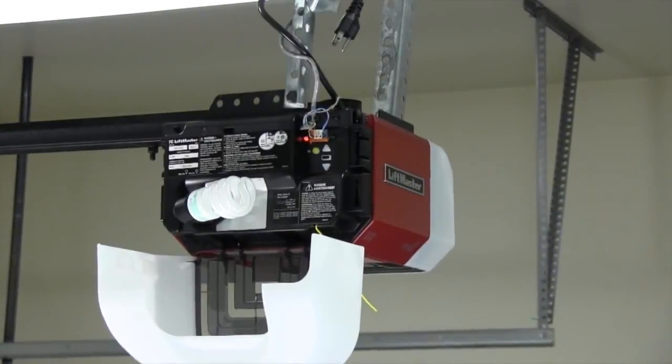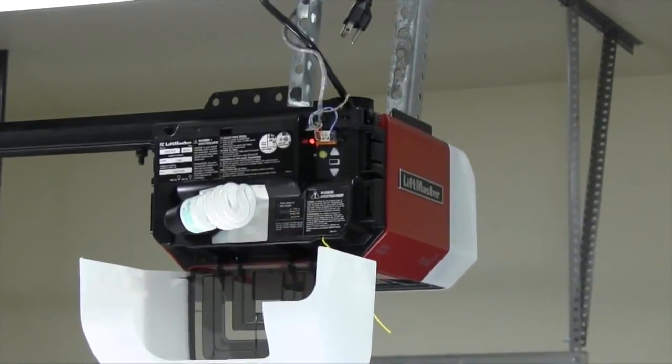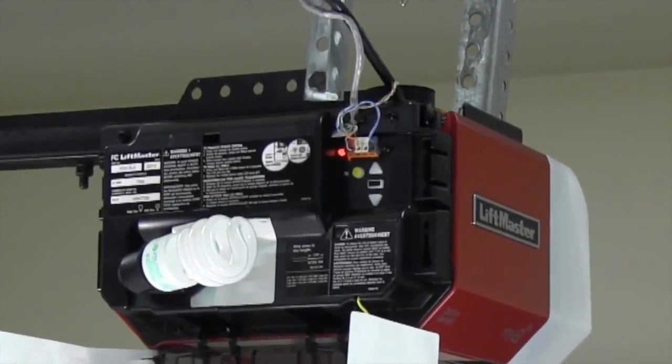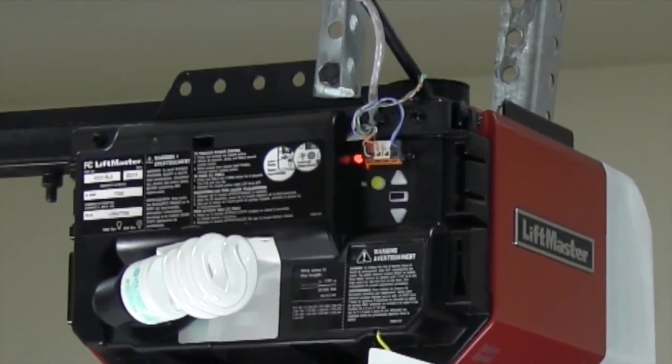The battery status LED will either glow solid orange indicating the garage door opener is operating on battery power, or it will flash orange indicating the battery is low.